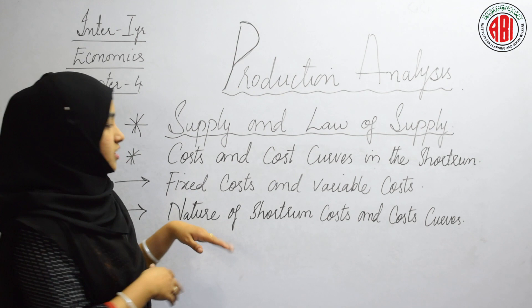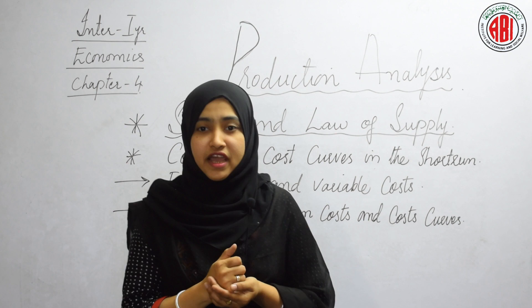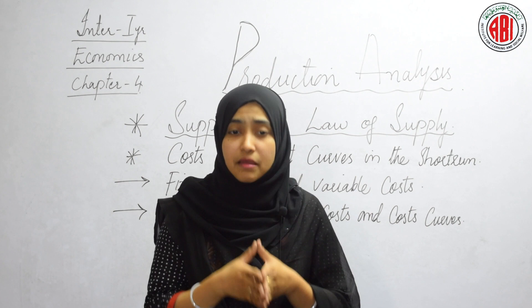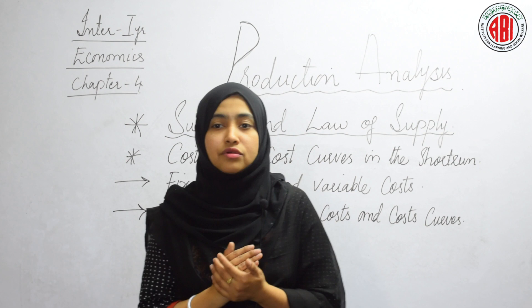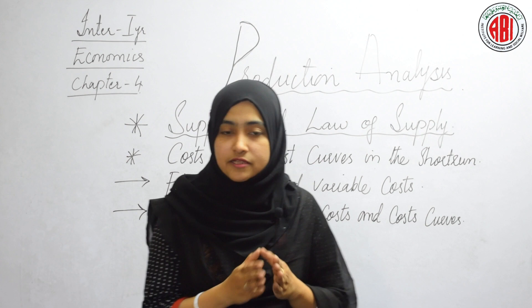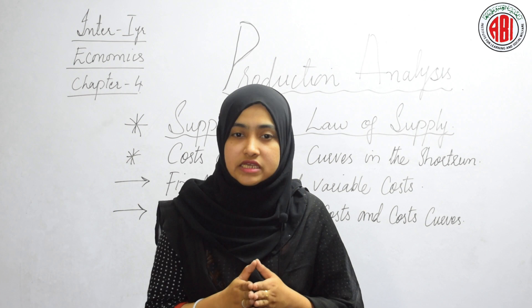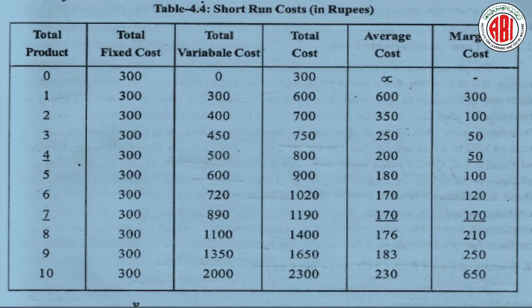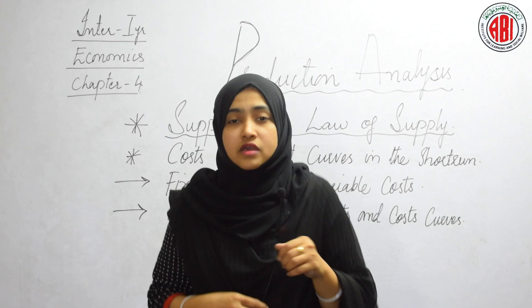After fixed and variable cost, we will discuss about the nature of short run cost and cost curves. The short run is a period of time within which firms can vary output by varying only the variable factors of production. Fixed factors such as buildings, capital, and permanent employees cannot be varied. The short run cost structure of a firm reveals fixed cost and variable cost. The related concepts are Total Fixed Cost (TFC), Total Variable Cost (TVC), Total Cost (TC), Average Cost (AC), and Marginal Cost (MC).